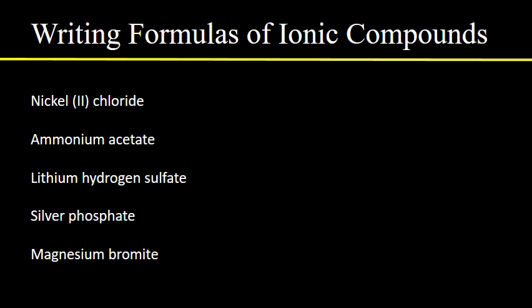For the first one, nickel(II) chloride: nickel is a transition metal, and the Roman numeral two tells us it's a plus two ion. Chloride is a simple anion with a charge of minus one. Making the table, you'll see you need two chlorides for every one nickel. So the formula for nickel(II) chloride is NiCl₂.